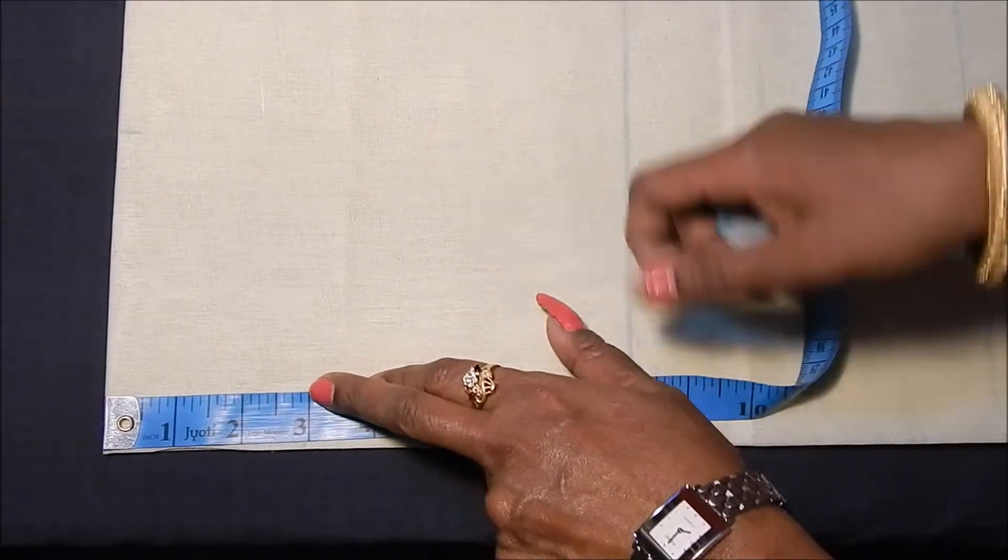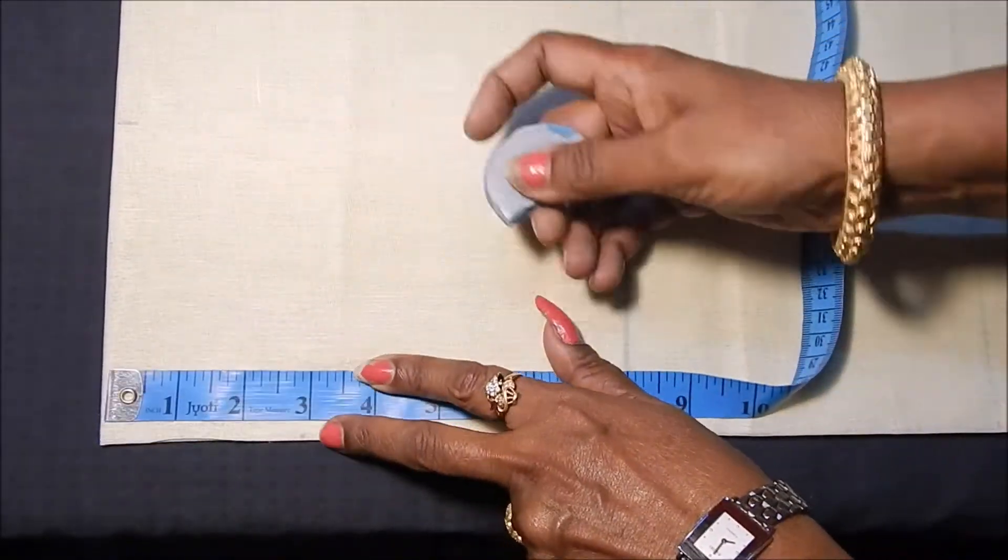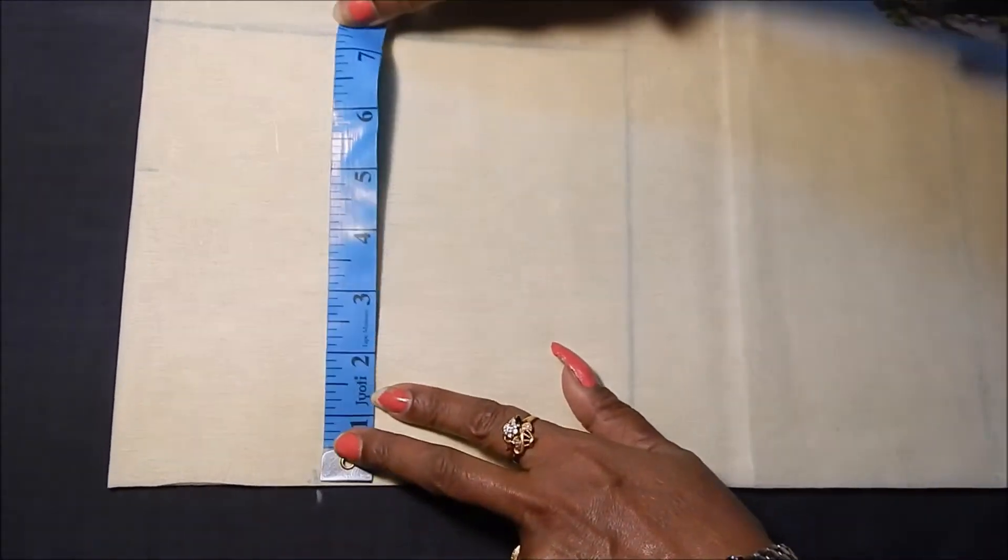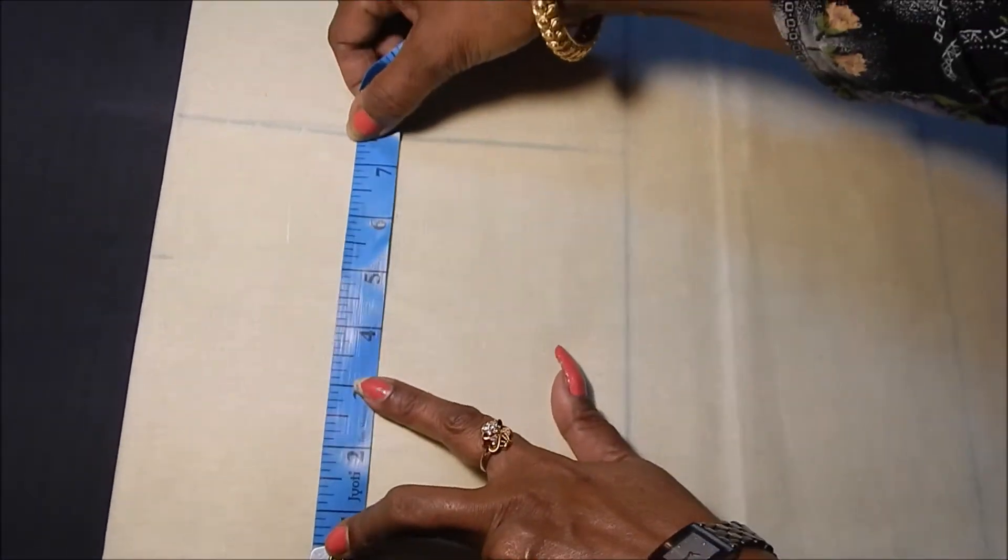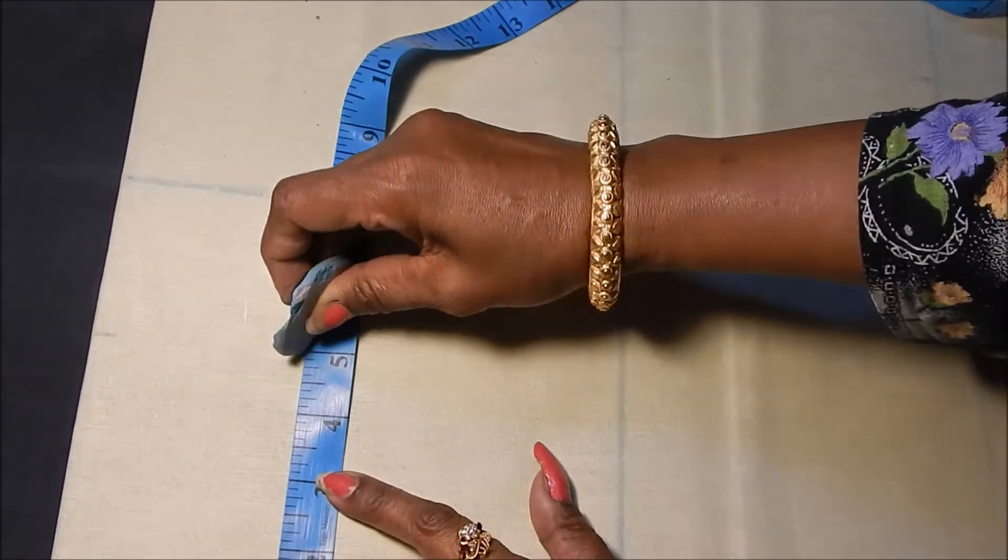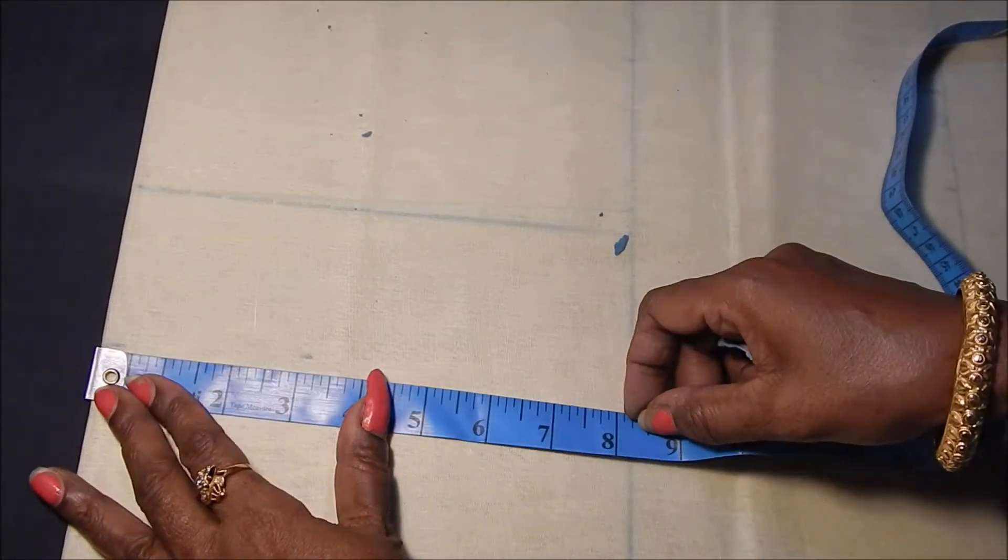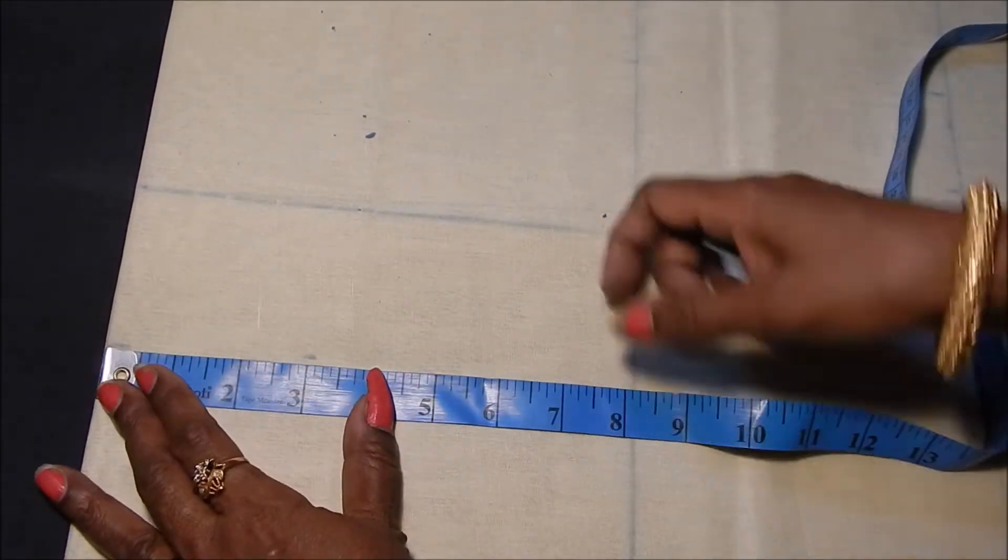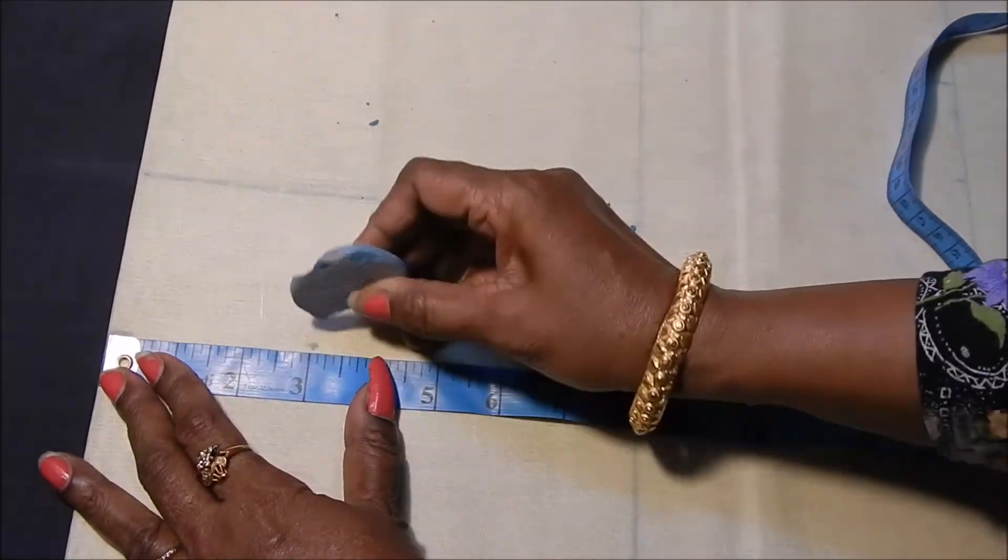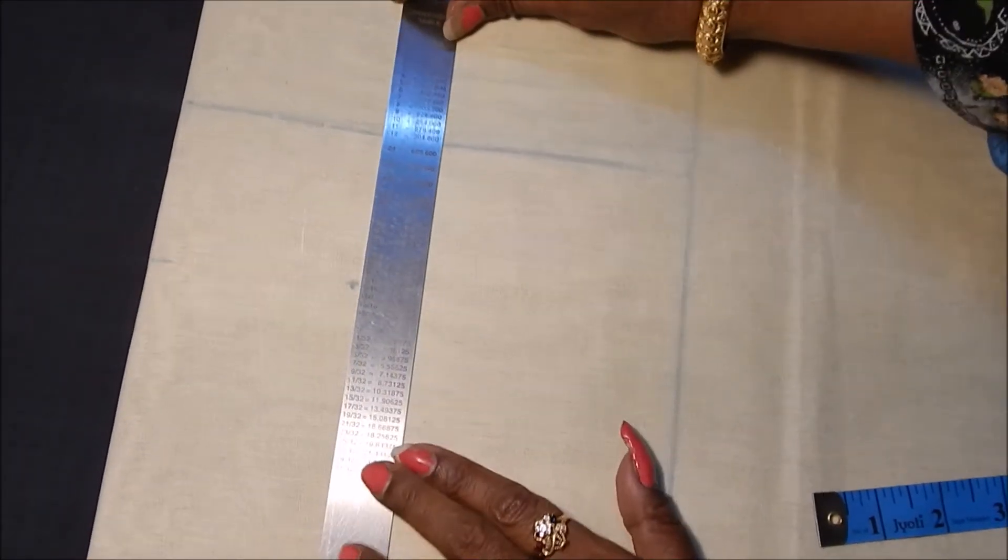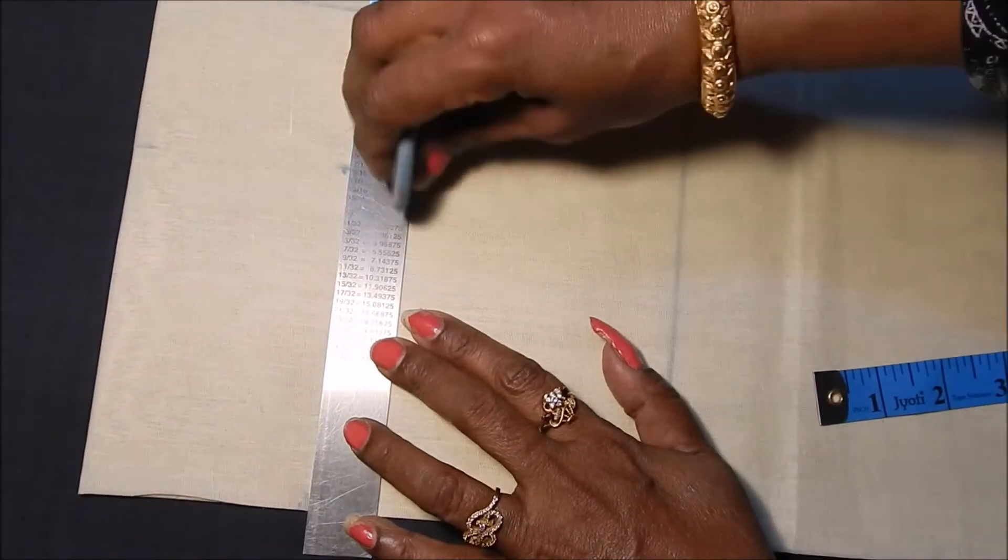Neck depth two and a half inches plus half inch for stitching purpose. To preserve the boat neck shape, make sure that the neck depth should not exceed three and a half inches. So make a box of five inch width, three inch depth. After sewing we will have two and a half inch neck depth.